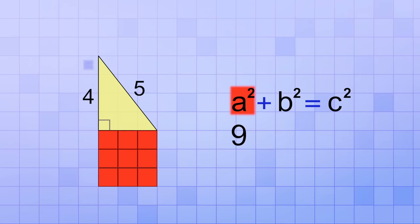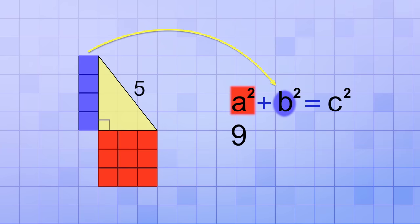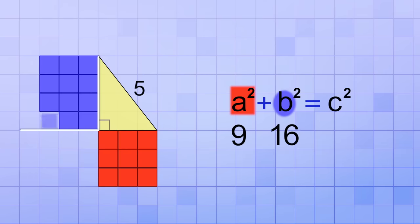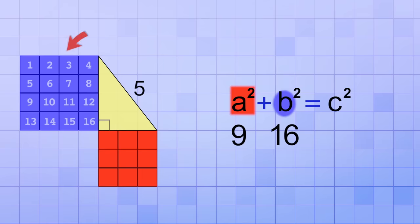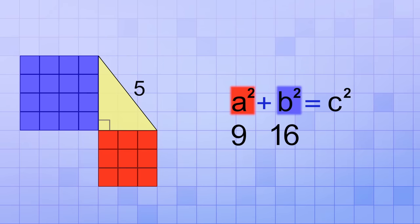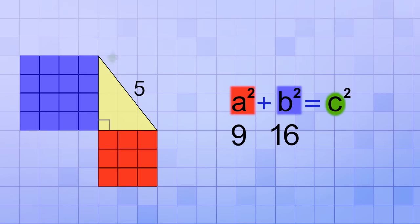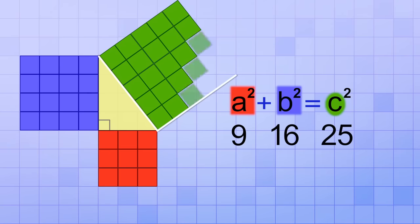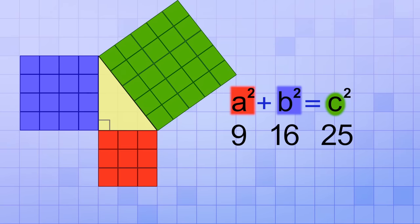Next, let's look at the side that's 4 units long, which we'll call side b. Squaring 4 means multiplying 4 times 4, which is 16. The geometric equivalent is a literal square that is 4 units on each side and covers a total area of 16 units. So this blue area represents b squared in the Pythagorean Theorem. And finally, let's deal with the hypotenuse, or side c, which is the longest side at 5 units long. Squaring 5 means multiplying 5 times 5, which is 25. The geometric equivalent is a 5 by 5 square with an area of 25 units. So this green area represents c squared in the Pythagorean Theorem.